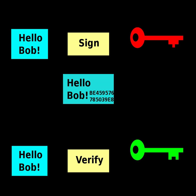A digital signature scheme typically consists of three algorithms: A key generation algorithm that selects a private key uniformly at random from a set of possible private keys. The algorithm outputs the private key and a corresponding public key.